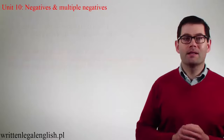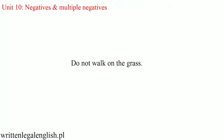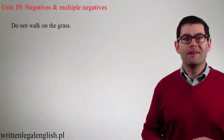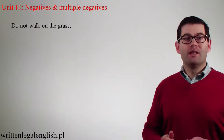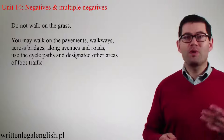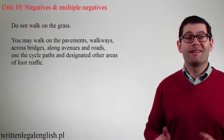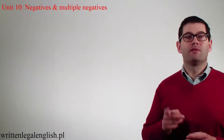One last issue. Take a few seconds to think about the errors in this sentence. What's wrong? Nothing. You have to use the negative form when it's clearly easier to understand than the positive. For example, the positive version of this prohibition would be a mistake: 'You may walk on the pavements, walkways, across bridges, along avenues and roads, use the cycle paths and designated other areas of foot traffic.' Needless to say, the use of a negative here is appropriate. But you must remember the rule: one negative per sentence.